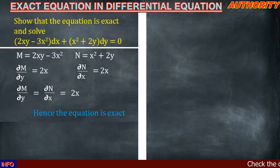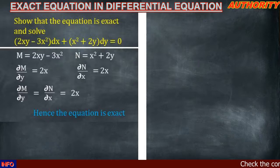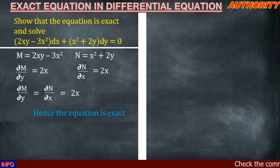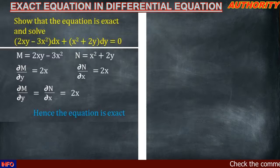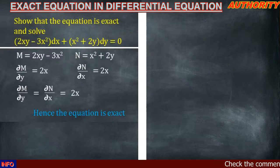To summarize: we call the function attached to dx 'M' and the function attached to dy 'N'. We differentiate M partially with respect to y, and differentiate N partially with respect to x. If these two partial derivatives are equal, then the equation that M and N come from is exact.